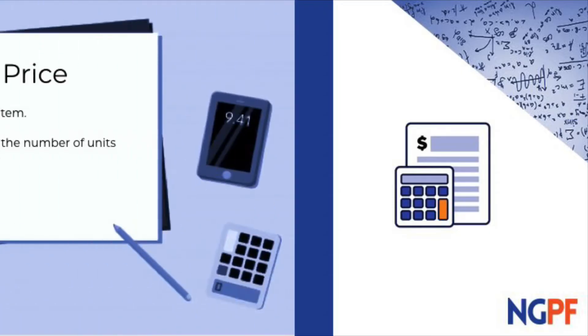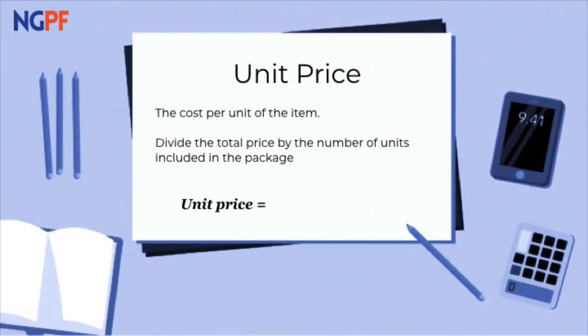For a bit of background, unit price is defined as the cost per unit of the item. We can solve for this by taking the total price of the package and dividing by the number of units included.